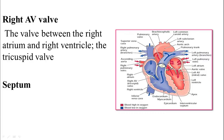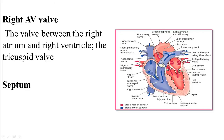A septum is a wall or partition. Septum is the singular form and the plural form is septa. We have the interatrial septum and the interventricular septum, so the blood on the left side of the heart and the right side of the heart does not mix together. The septum is defined as a wall dividing two cavities.